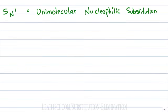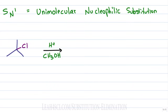SN1 stands for unimolecular nucleophilic substitution. Keep in mind this reaction is in competition with E1. The mechanism starts when the leaving group breaks away from the alkyl chain, taking the electrons with it, leaving carbon with a positive charge.